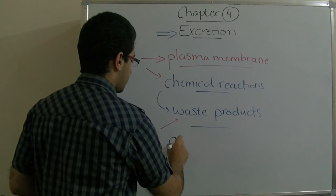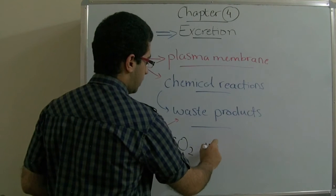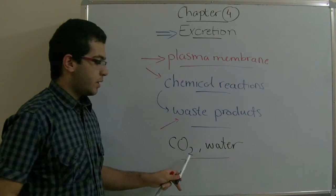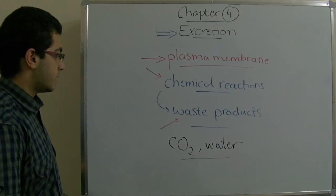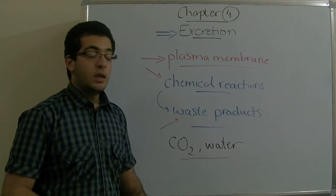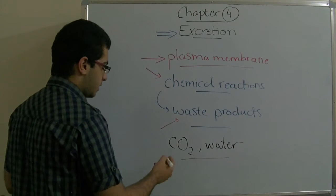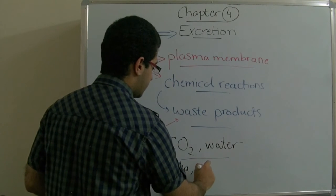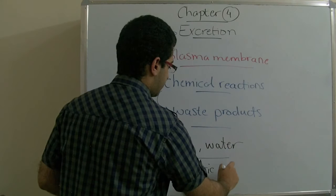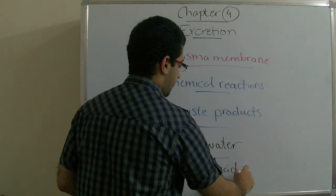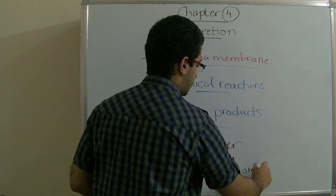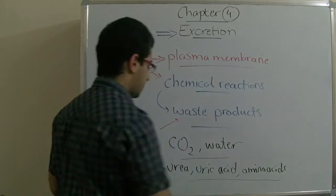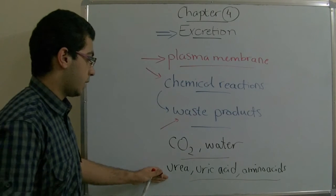The most important waste products, or excreted substances, are carbon dioxide and water, which result from the breakdown of the organic substances eaten by the man, and the nitrogenous waste products such as urea, uric acid, and amino acids, which result from the breakdown of protein molecules.